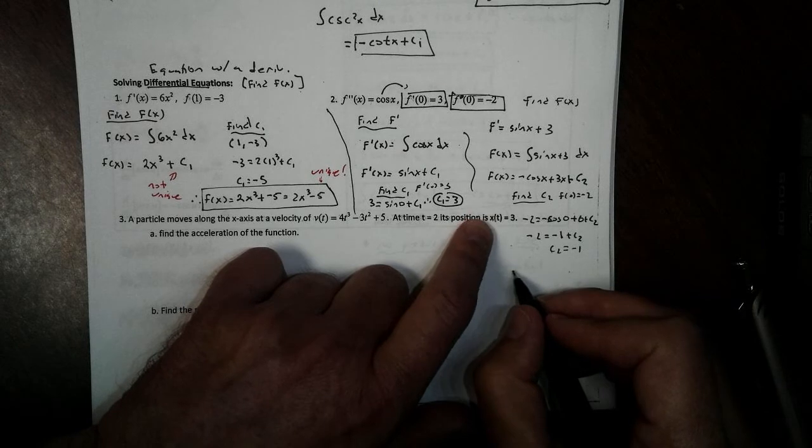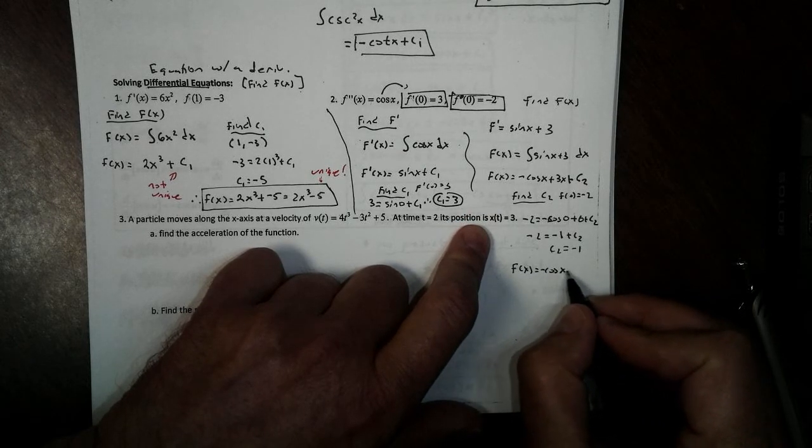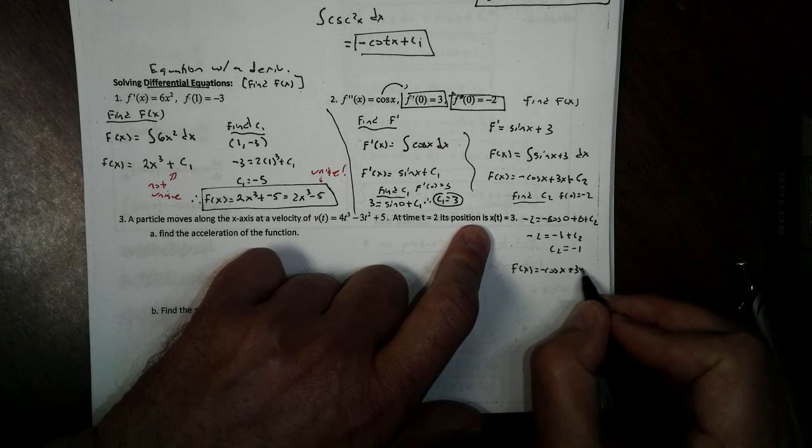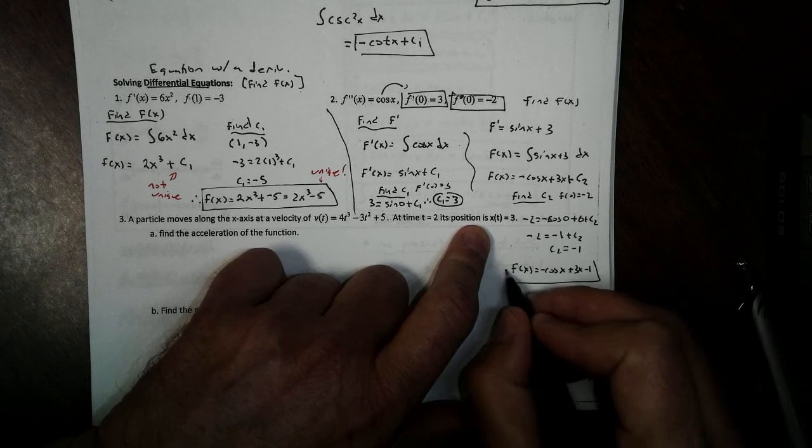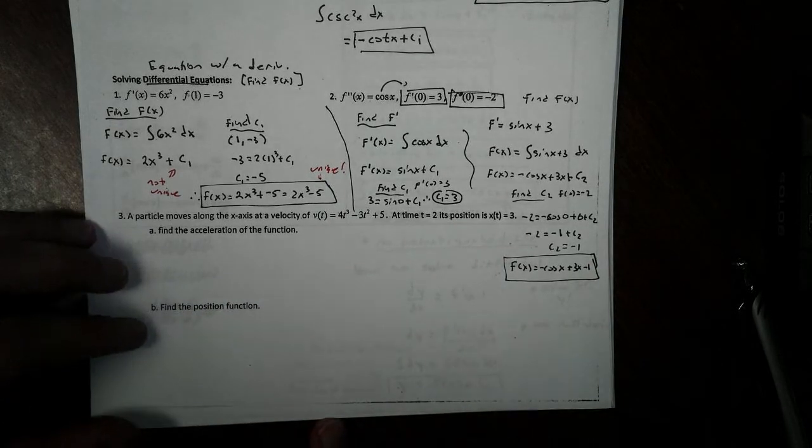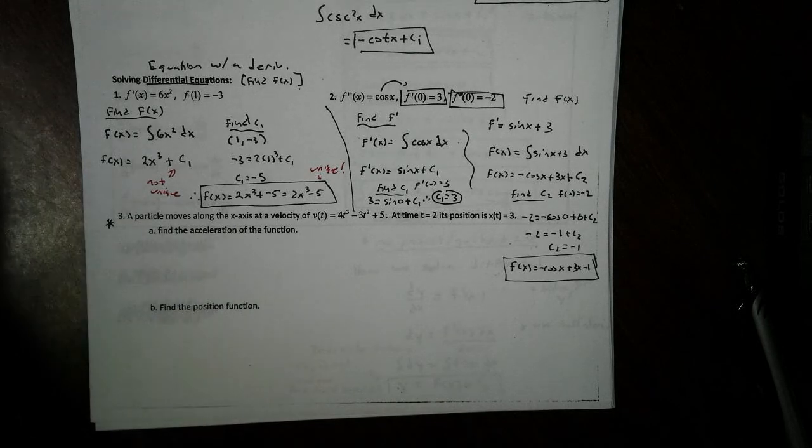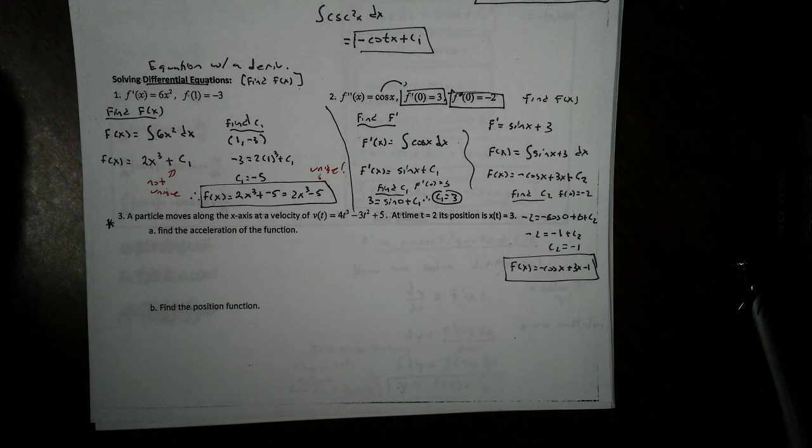Now I'm not done yet. I've got to write up my answer. f of x equals negative cosine of x plus 3x minus 1. And there is our function. We're going to talk about this problem in another video. I hope you guys enjoyed the lesson. I will see you guys later. Bye-bye.